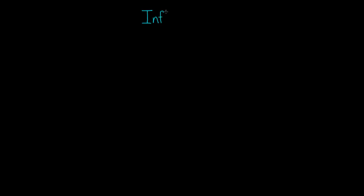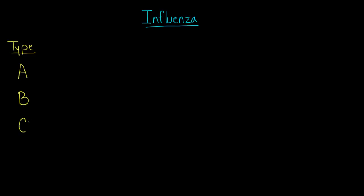Let's talk about influenza viruses and the three different types of influenza. There are actually three types, or three families I think of them as. We're going to go through each family and talk about the differences between them. Let's label the types: there's type A, which is the most common type you usually hear about, and type B and C are less often talked about, but we're going to go through them systematically.